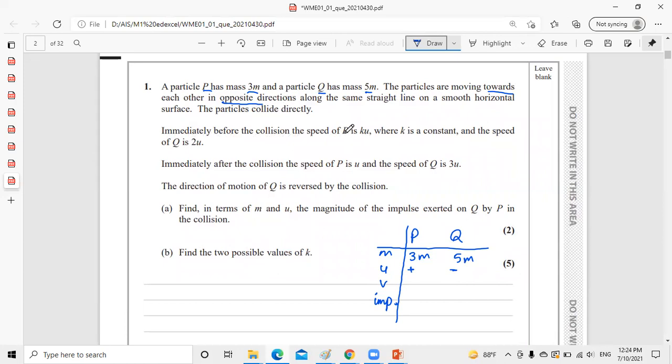Immediately before collision, the speed of P was KU and the speed of Q is 2U. So this is KU and this is -2U. Immediately after collision, the speed of P is U, so it can be positive or negative U. Where K is constant, the speed of Q is 2U. This can also be positive or negative.